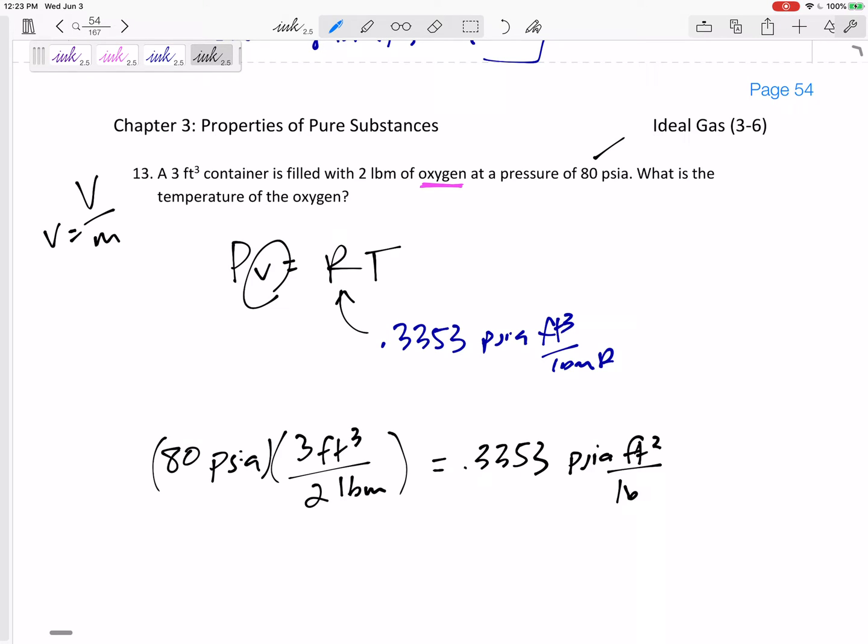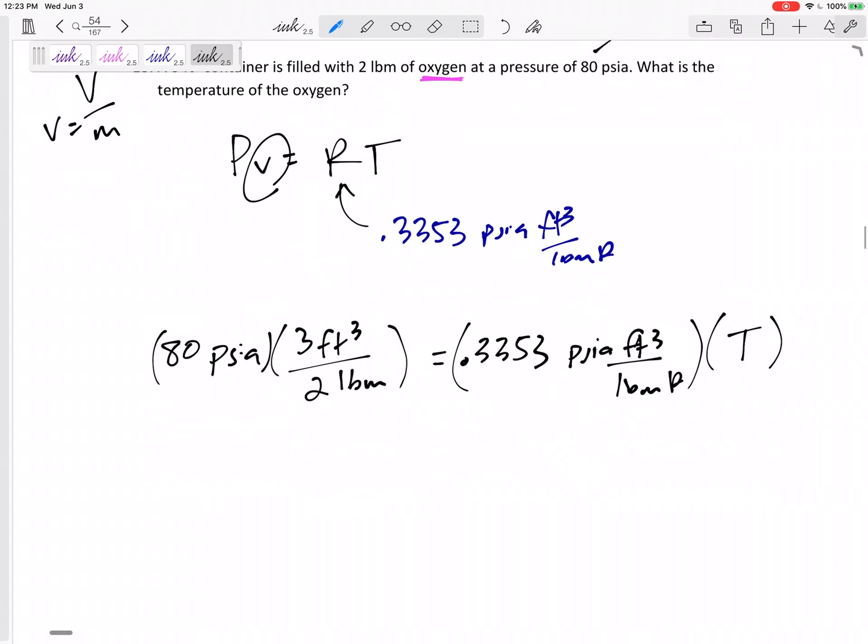Feet cubed per pound mass Rankine times the temperature. Can I just plug in, or sorry, the temperature, that's what we're looking for. So if this temperature is in Rankine, then that cancels out with that.